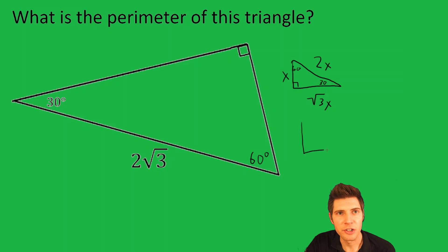If we redraw the triangle we have here to align with this one, notice that the 2x is the hypotenuse. In this case, 2√3 is opposite our 90 degrees. So now opposite the 30 needs to be half of that, because we're going from 2x to x. Well, half of 2√3 is just √3.